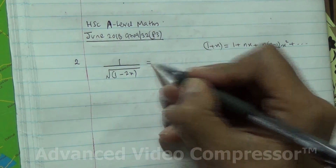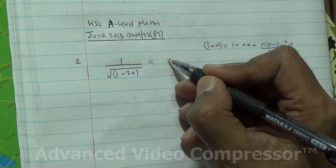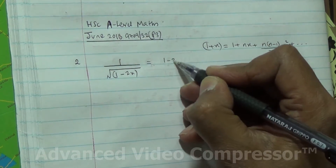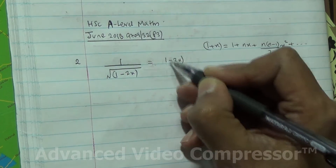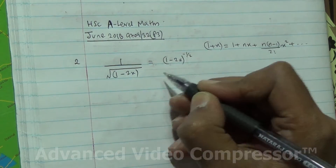So first of all, we're going to have to rewrite this as 1 minus 2x to the power of negative half.